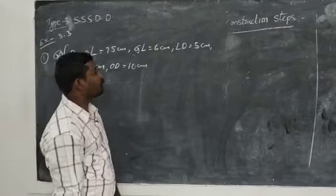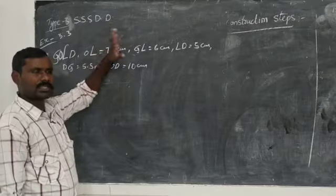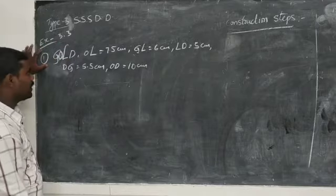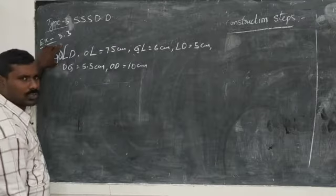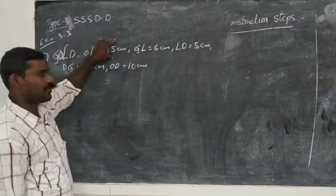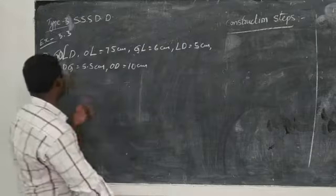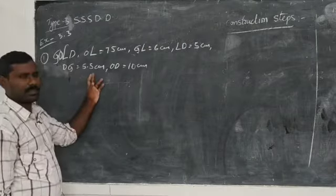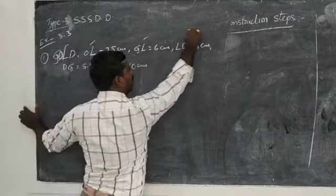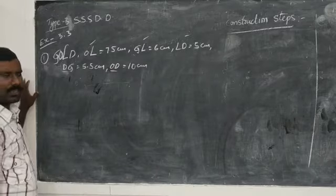Now we are going to Type 3: when three sides and two diagonals are given, construct a quadrilateral. In Exercise 3.3, first question: construct a quadrilateral GOLD. Given measurements are OL equal to 7.5 centimeters, GL equal to 6 centimeters, LD equal to 5 centimeters, DG equal to 5.5 centimeters, and OD equal to 10 centimeters. Here OL, GL, and LD are the sides, and DG and OD are the diagonals.